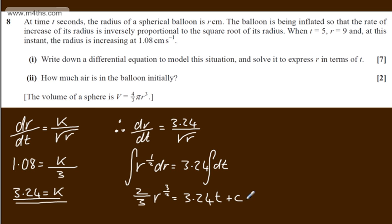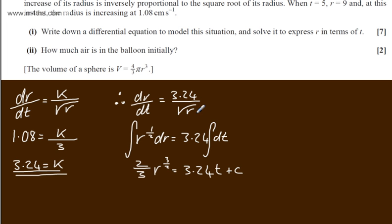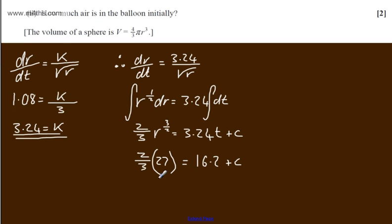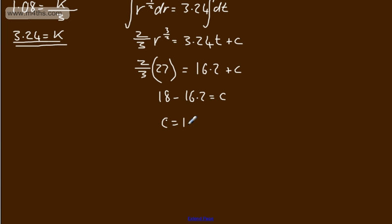So what we want to do at this stage is find c. We've got enough information here. When t equals 5, r equals 9. So if we sub in r equals 9, we're going to have 2 thirds of 9 to the power of 3 over 2. We square root and then cube, and that's going to give me 27. And that's going to be equal to 5 lots of 3.24, which is 16.2, and then plus the c. So this is going to give me 18 minus 16.2 equals c. So we can see that c is equal to 1.8.